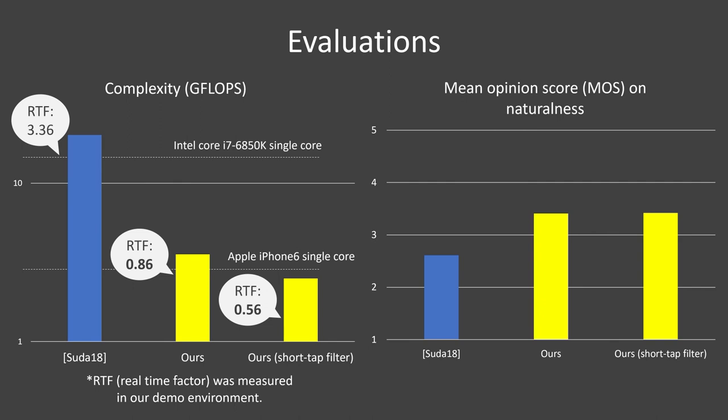Here are the results of evaluations. The left side of the slide shows the computational cost of our system. The complexity of our system is around 2.5 gigaflops, and the real-time factor with our system is under 1.0. The right side shows the evaluation results of converted speech quality. Our system can attain converted speech with a 3.4 mean opinion score of naturalness.